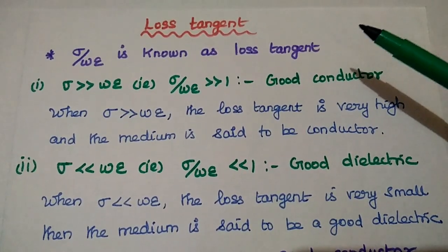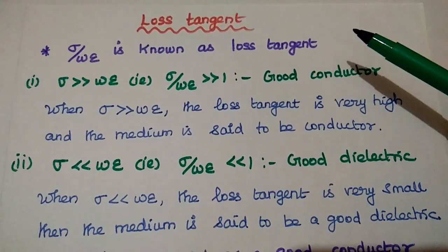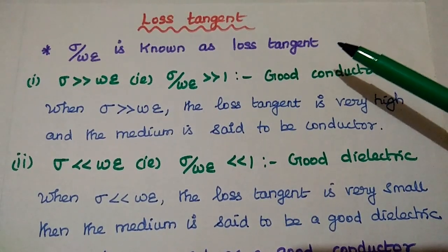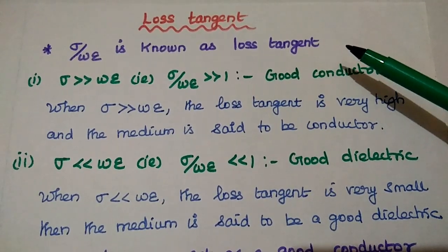Loss tangent represents the dividing line between good conductors and good dielectrics. The term sigma by omega epsilon is known as loss tangent.